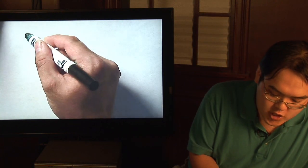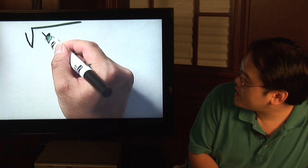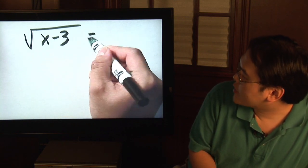So here's an example of a square root equation. Suppose you have the square root of x minus 3 equals 5.